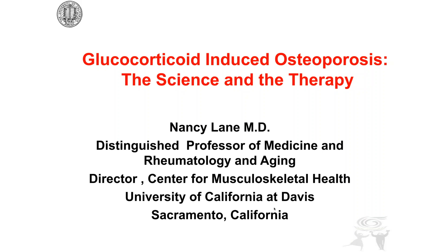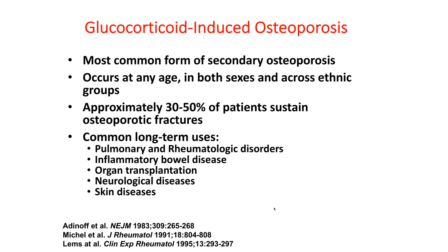Thank you, Dominique, and welcome everyone to our discussion on glucocorticoid-induced osteoporosis. This morning I will discuss the work done in our laboratory and others to better define the science, then get along to the therapy and how best to screen and identify patients that need treatment. As most of you know, glucocorticoid-induced osteoporosis is the most common cause of secondary osteoporosis, occurring at any age in both males and females and across all ethnic groups.